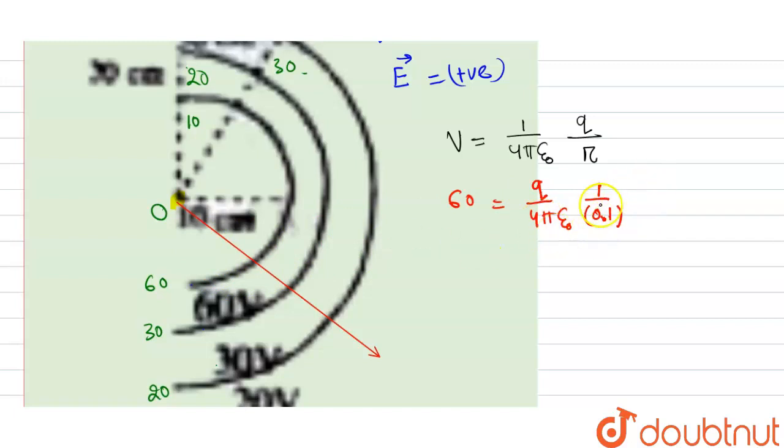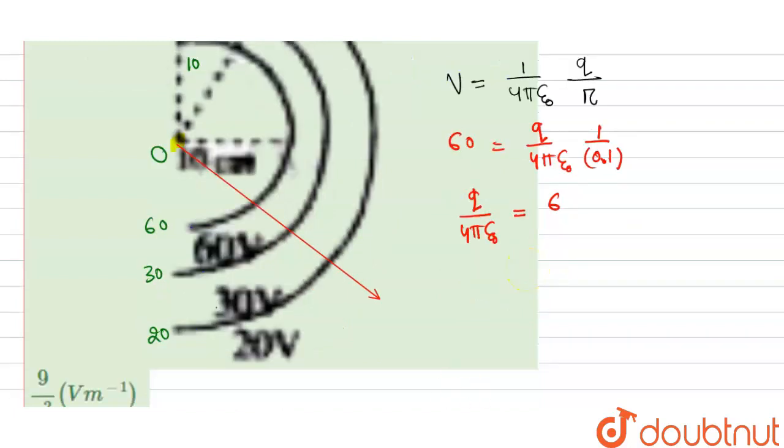Because we have to do all this thing in SI unit. So from here we can figure out that our q by 4πε term is nothing but it is 6. If you take this term 0.1 to the left hand side we will get 6. We can check it.